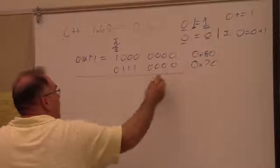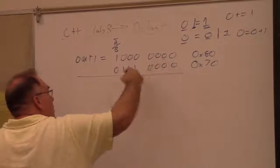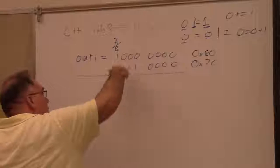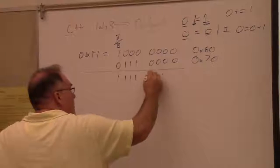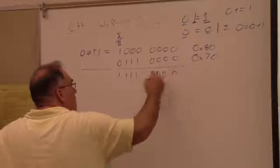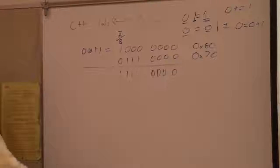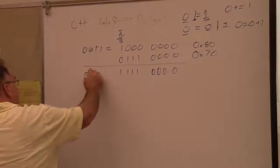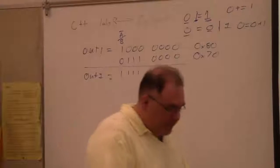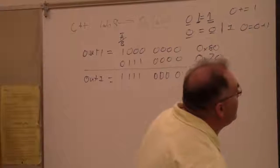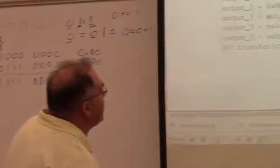And when we or these together, if there's a one in either the top or bottom, we get a one on the output. So now out one is equal to this. So that's what the or 70 is equal to.